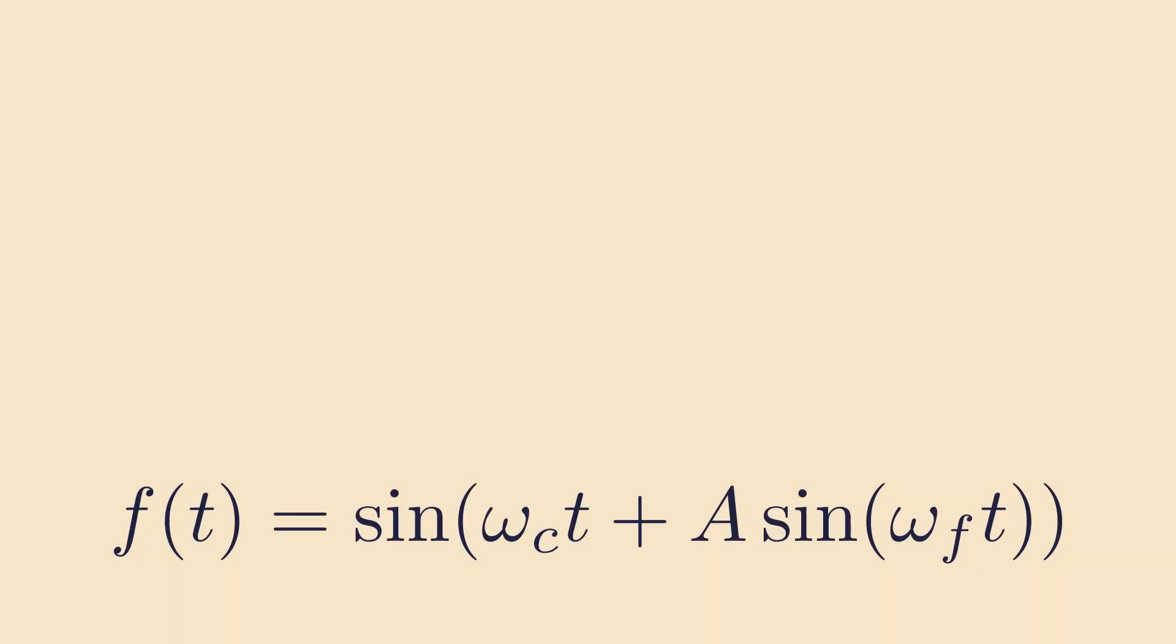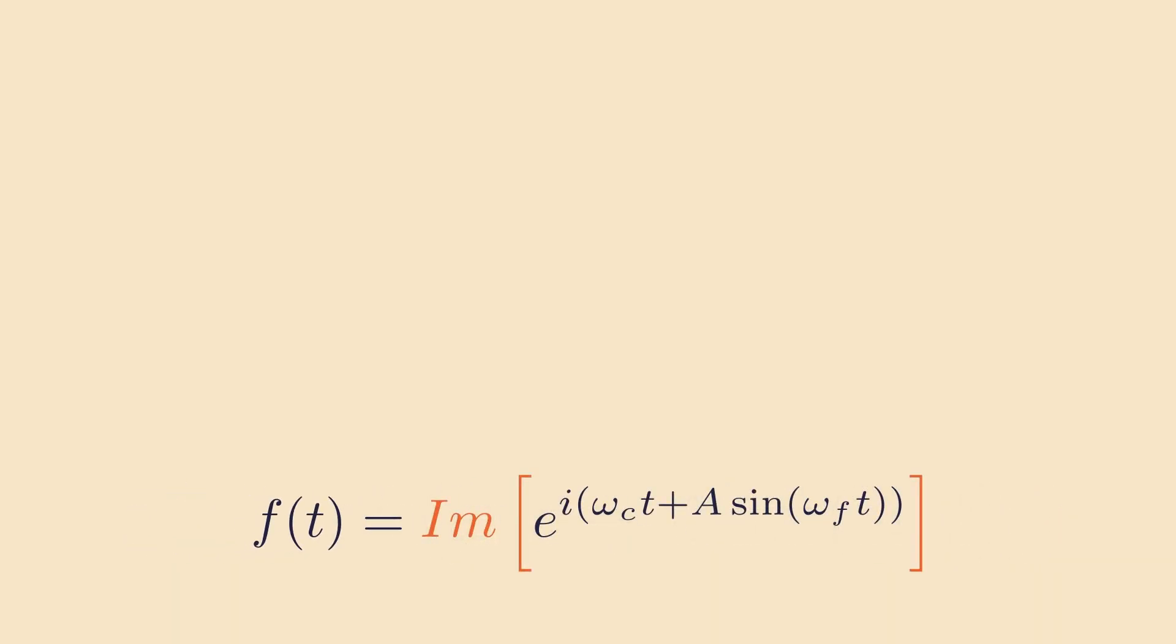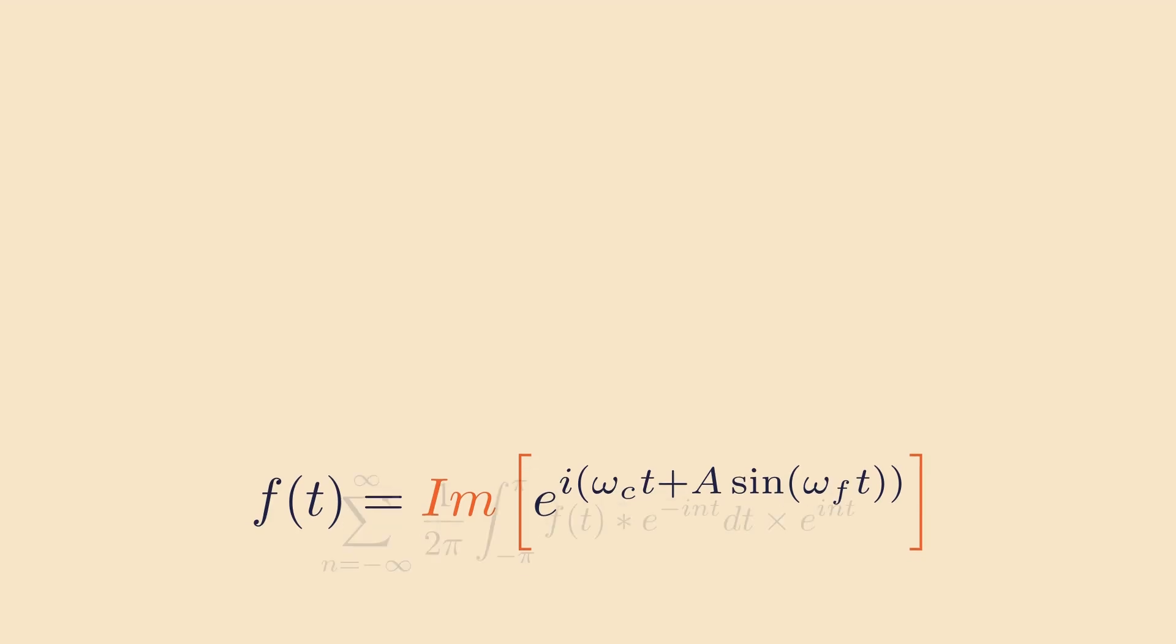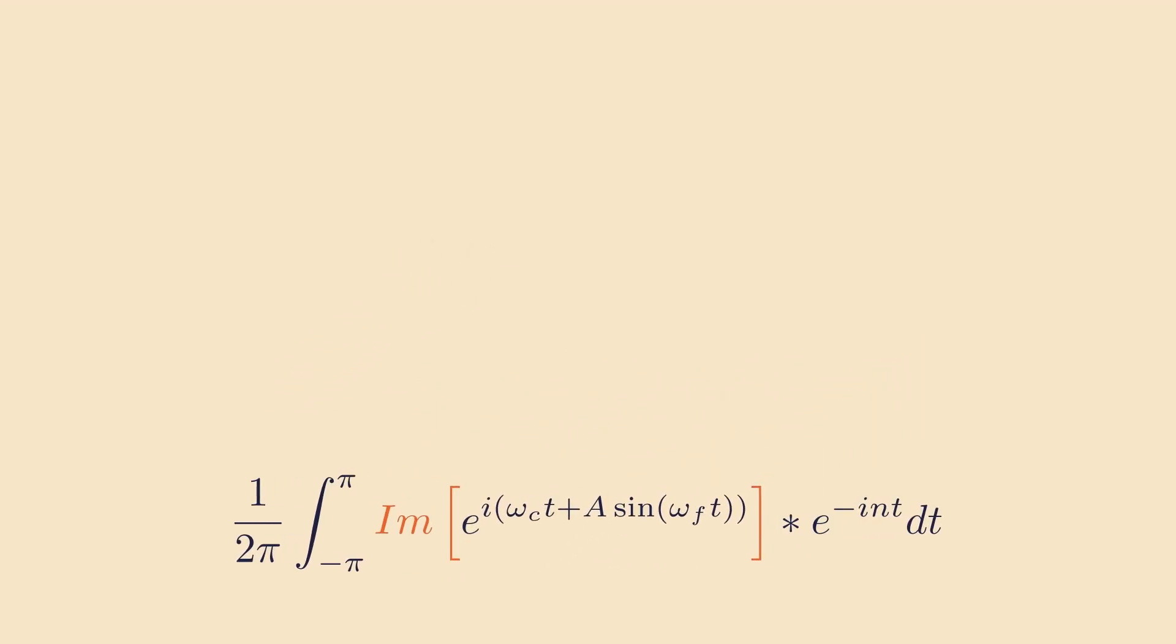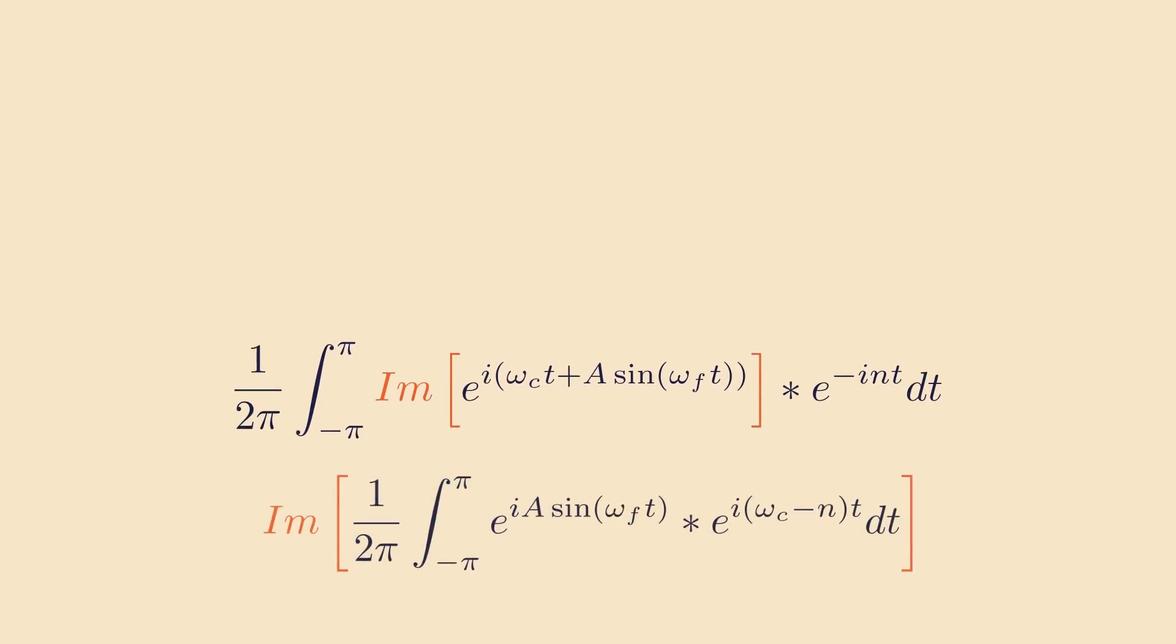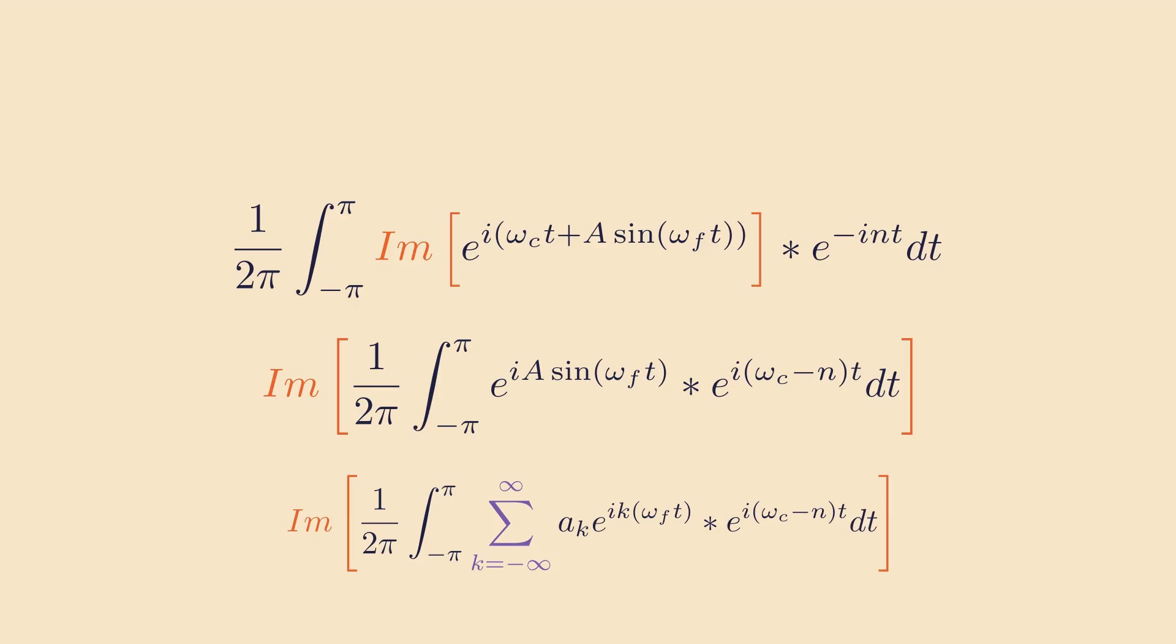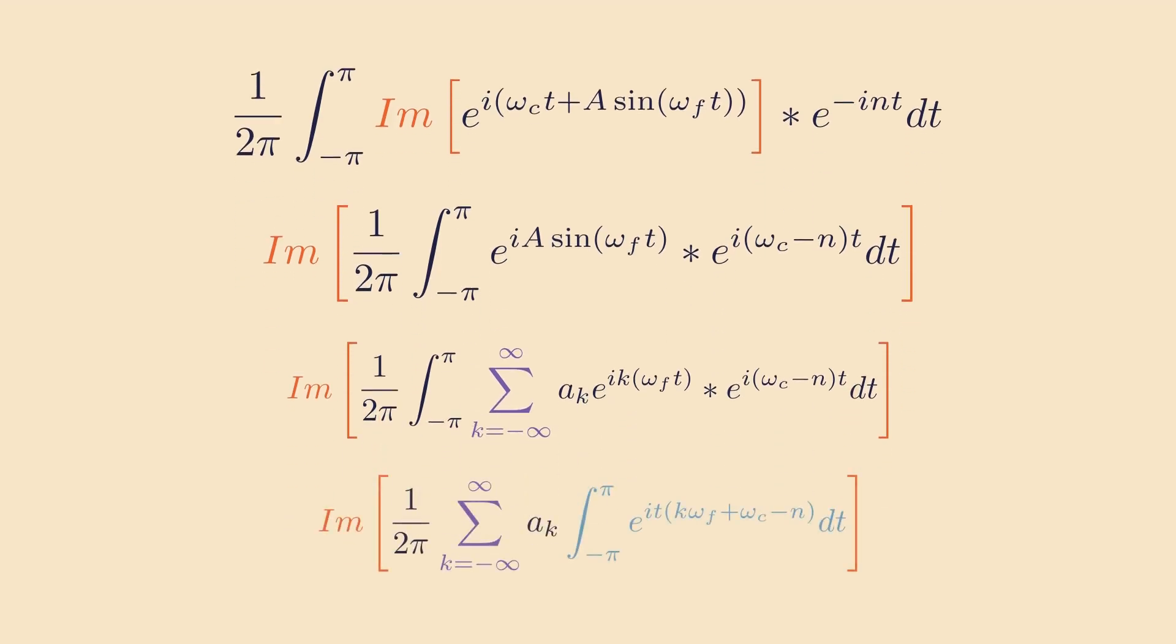We'll start by writing our vibrato expression as a complex exponential. Remember that Euler's identity tells us that sine is just the imaginary part of the exponential. Now we recall Fourier transform. For now, we'll only consider the coefficient and we'll add the summation back at the end. Substituting our vibrato expression for mt, we get this and now we rearrange. To continue, we rewrite e to the sine term as its own Fourier transform. This will help simplify the annoying sine part. Now we can rearrange further.